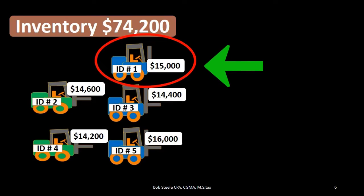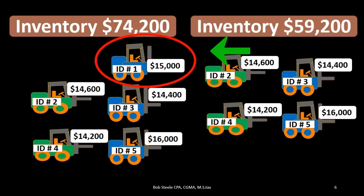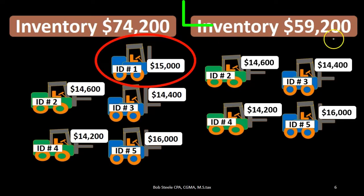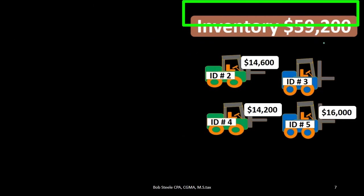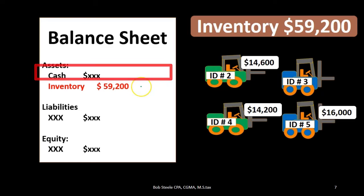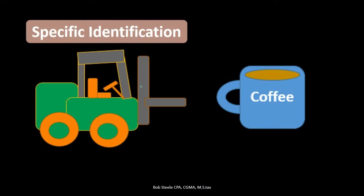On the balance sheet side, we have $74,200 in assets. Reducing it by that $15,000 forklift we sold brings it to $59,200. The balance sheet would then show $59,200 in inventory remaining after that sale.